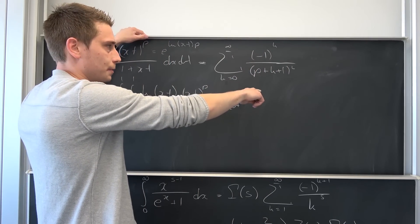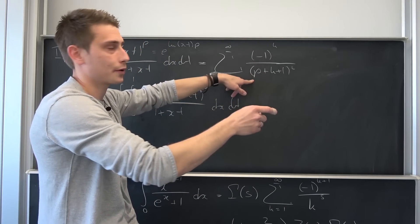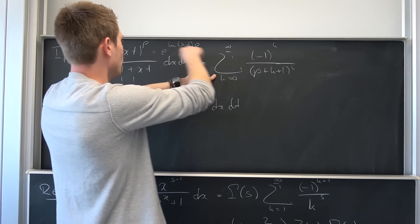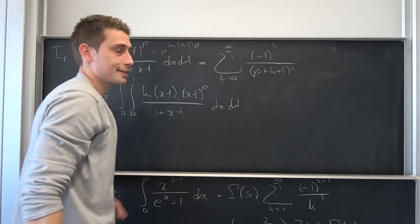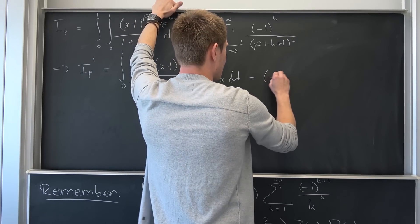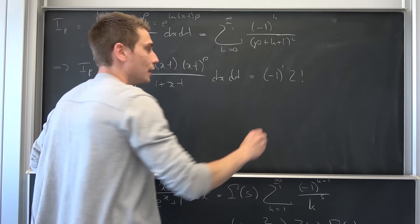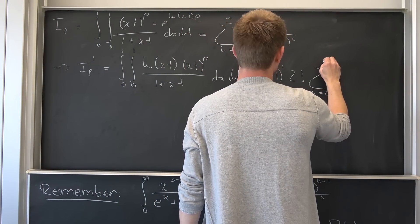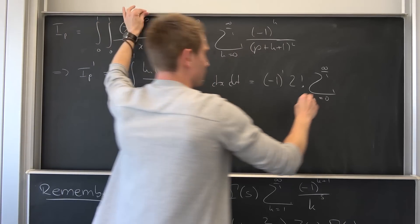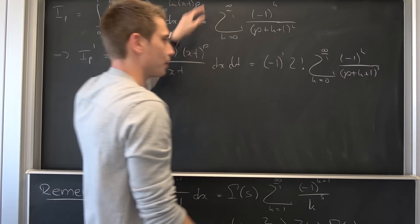We also want to differentiate the right-hand side with respect to p. This fraction is nothing but p plus k plus 1 to the negative 2 power. Our sum converges uniformly on our interval, meaning we can interchange this differential and the infinite summation. Overall, differentiating gives us a factor of negative 2, which I'll write as negative 1 to the first power times 2 factorial. Then we get a sum running from k equals 0 to infinity of negative 1 to the k-th power over p plus k plus 1 to the third power.